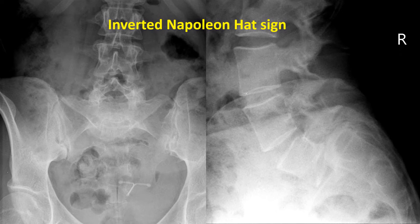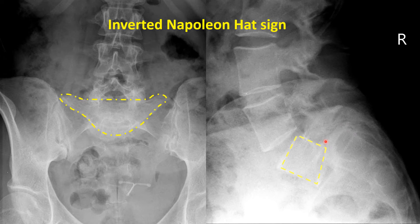The inverted Napoleon hat sign is a radiographic feature of a pretty significant spondylolisthesis of L5. The term refers to a bird's-eye view of the L5 vertebral body. On the lateral view, L5 has slipped so far forward — at least a grade three — that on the frontal view, L5 and the sacrum overlap each other, and you are left with this inverted Napoleon hat sign. This is a sign of a pretty significant spondylolisthesis.